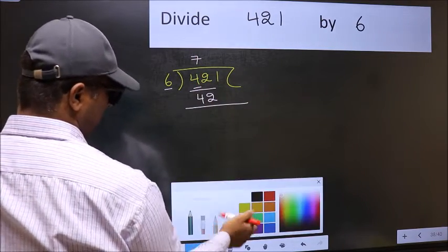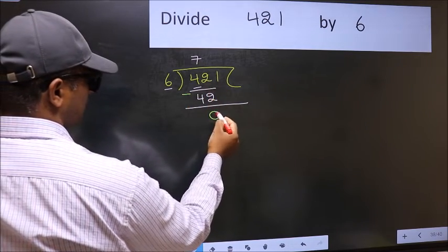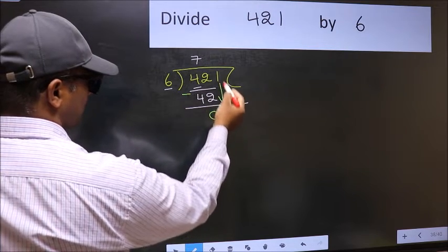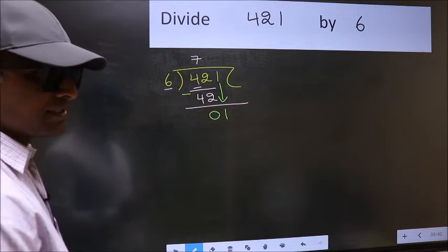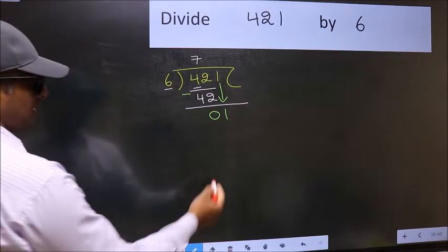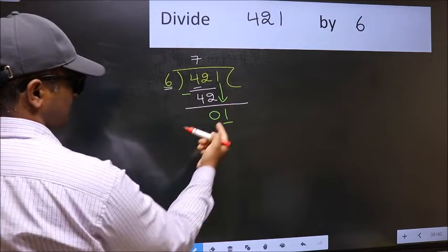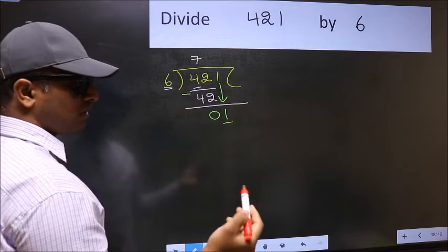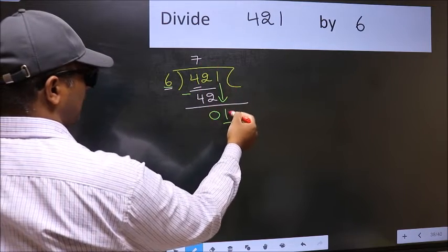Now you should subtract 42 minus 42 equals zero. After this, bring down the beside number, so 1 down. After this step, the mistake happens. The mistake is this: here we have 1 and here 6. 1 is smaller than 6, so what many do is they directly put dot and take zero, which is wrong.